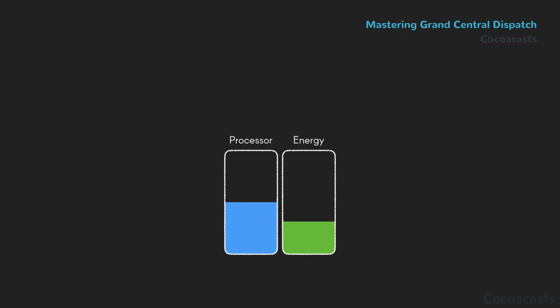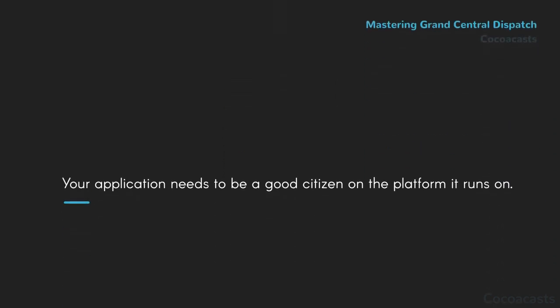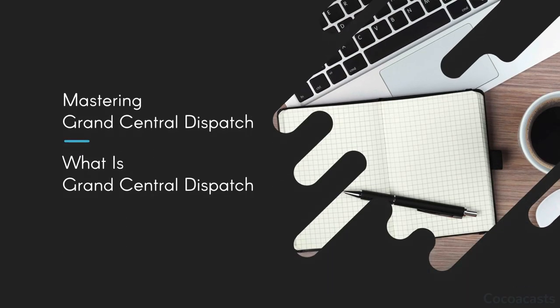Your application needs to be a good citizen on the platform it runs on. You can accomplish that by not only using Grand Central Dispatch, but also by understanding how it works — that is the focus of this series. Now that you know what Grand Central Dispatch is and how your applications can benefit from it, it's time to start working with dispatch queues. That's the focus of the next episode.